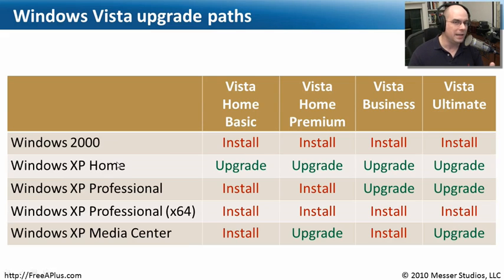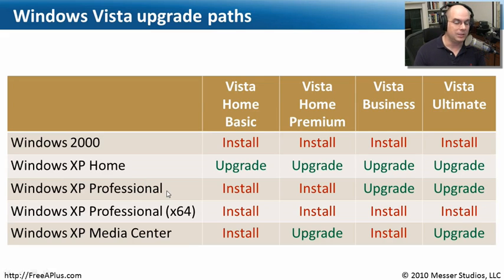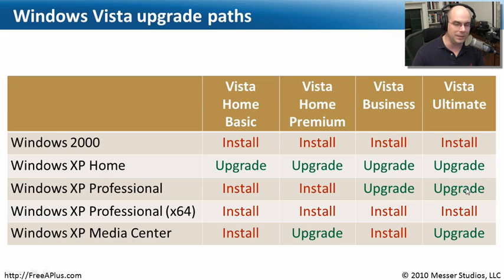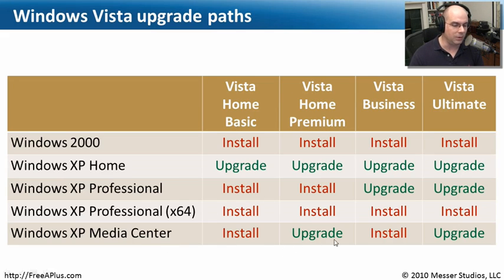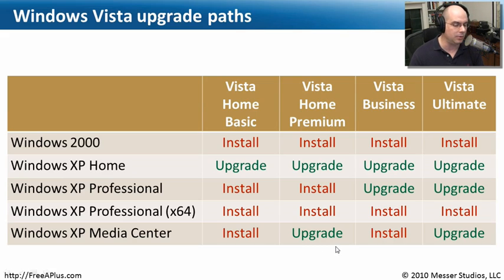This makes sense when you think about it. XP Home is the entry-level Windows XP, so it makes sense you'd be able to upgrade to anything in Vista. XP Professional is above XP Home, so it makes sense you'd only upgrade to at least Vista Business or Vista Ultimate — the more professional versions. Media Center is its own animal, neither home nor professional — it's designed for media. So you can upgrade to Vista Home Premium, where Media Center really belongs, and Vista Ultimate, which supports almost everything.